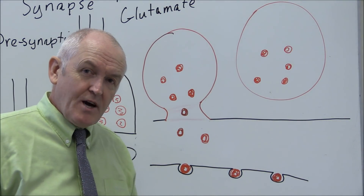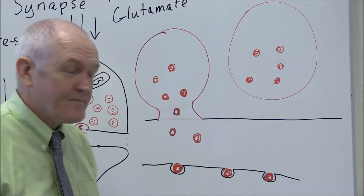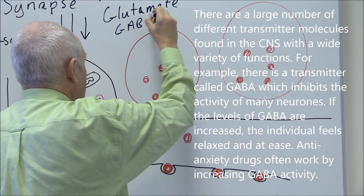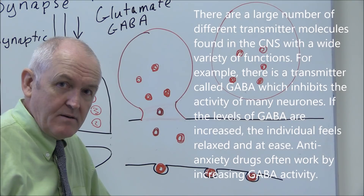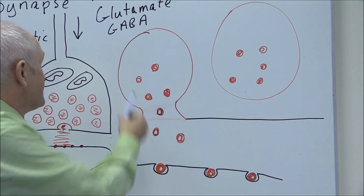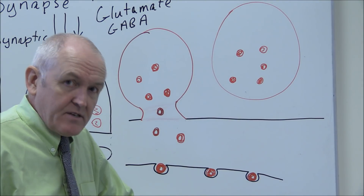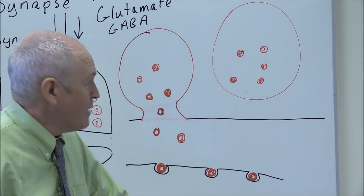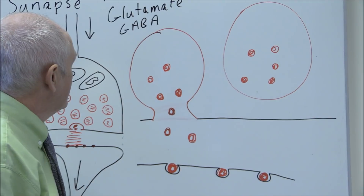Sometimes it's beneficial to calm activity down, and for that you need inhibitory chemical transmitters — that would be GABA, gamma-aminobutyric acid. GABA is the molecule acted on by benzodiazepines, which reduce anxiety and calm you down, because GABA is an inhibitory, calming neurotransmitter.